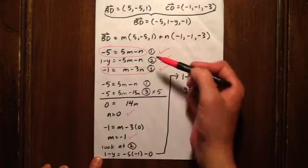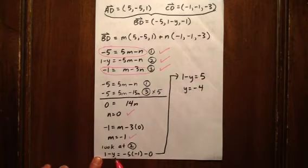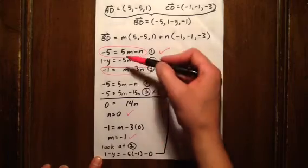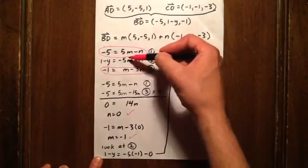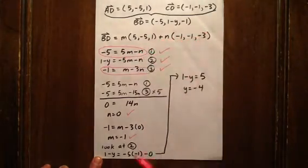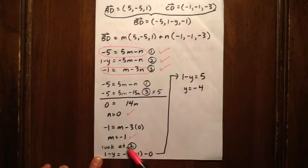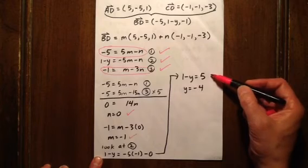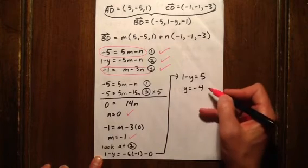We go back to equation 2 and we see that 1 minus y is going to be -5 times m minus n. So -5 times -1 minus 0. So 1 minus y is 5, which means y is -4.